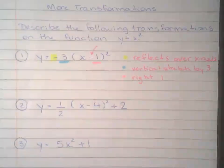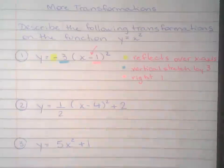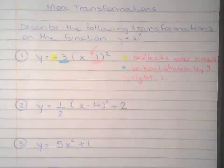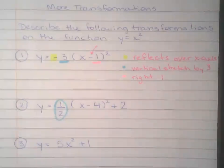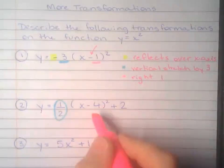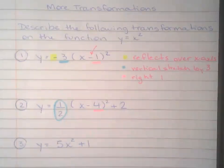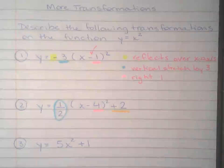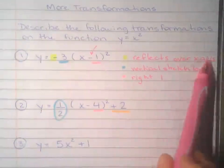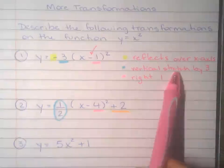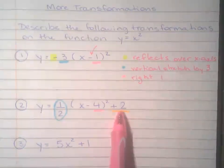So for number two, we're going to kind of go through the same thinking process right there. So this number in front, we're talking about a. And then here we have this right there. That's h. And then I'm going to do k right there. Remember, a is what tells you reflection or not, vertical stretch or vertical compress. h goes side to side. k up and down.